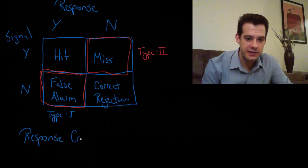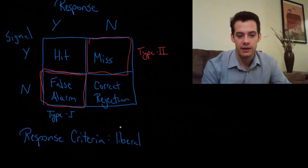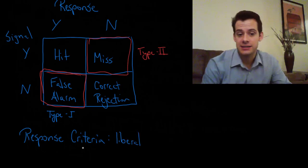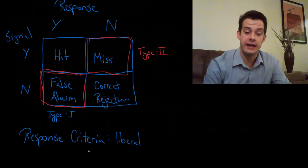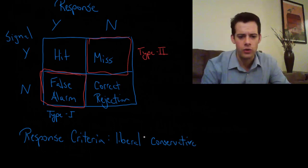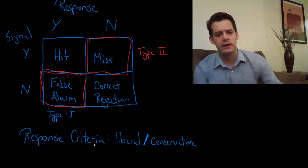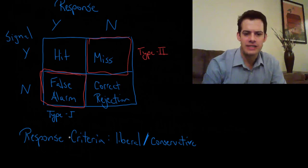Your response criteria is essentially asking what do you do when you're unsure? Do you lean towards yes or do you lean towards no? If we say you have a liberal response criteria that means you lean towards saying yes. So you think you heard it so you say yeah I heard that. Or we can say you have a more conservative response criteria and that means when you're unsure you lean towards no. You want to be really certain that you heard it so if you're uncertain you say no. And so now we can think about how this is going to influence your overall pattern of responding.